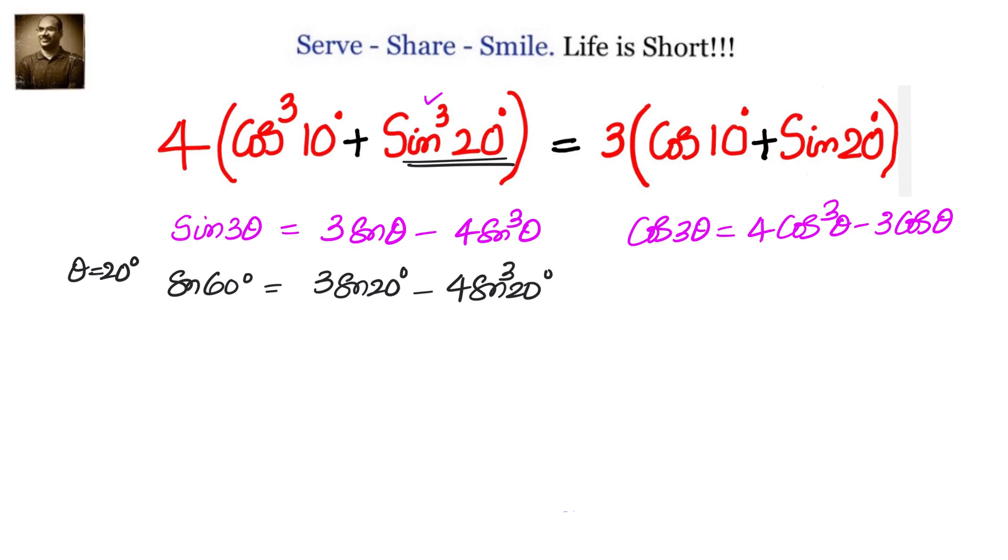Similarly for cos 3 theta, we have cos theta 10. So we will substitute theta equals 10, giving us cos 30 degrees equals 4 cos cube 10 minus 3 cos 10.